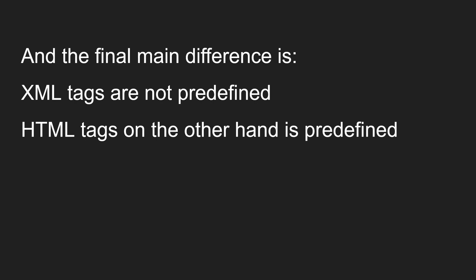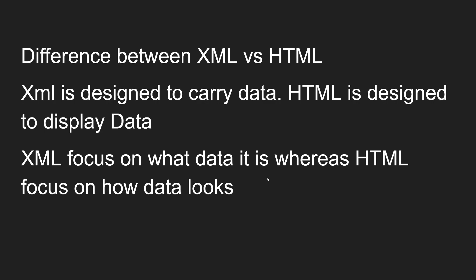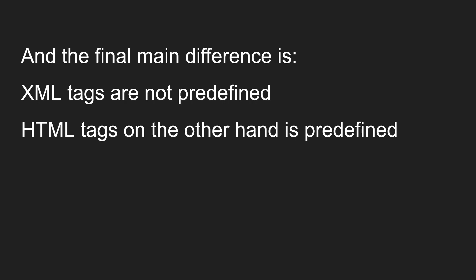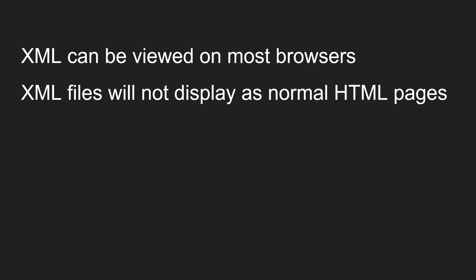So I will show you the difference between these two. XML and HTML look one and the same, but HTML is designed to display data whereas XML is designed to carry data. These XML tags are not predefined, whereas HTML tags are all predefined. XML can be viewed in most browsers, but XML files will not display as normal HTML pages — they will be shown directly in a document-style format. I will show you an example.